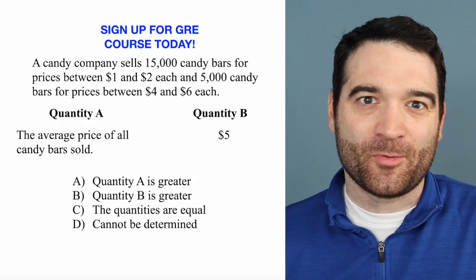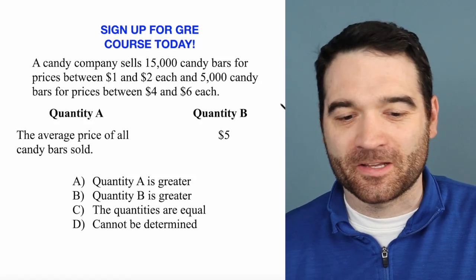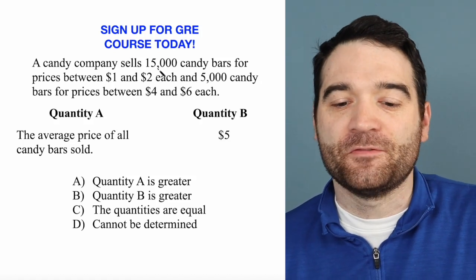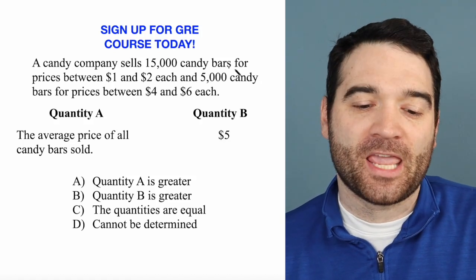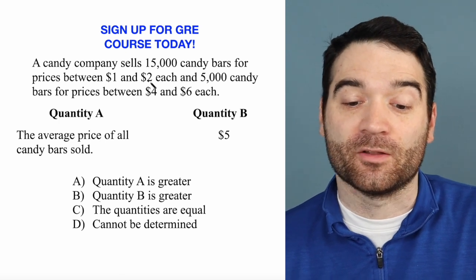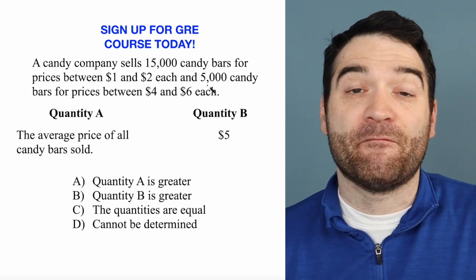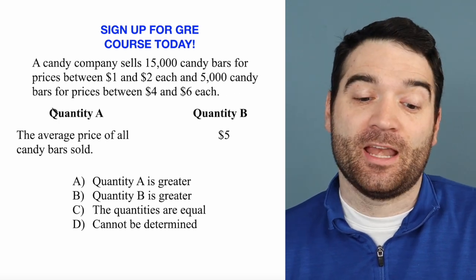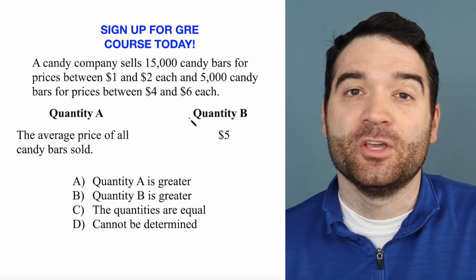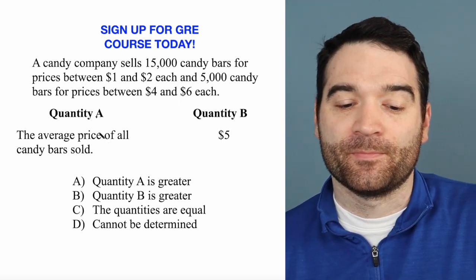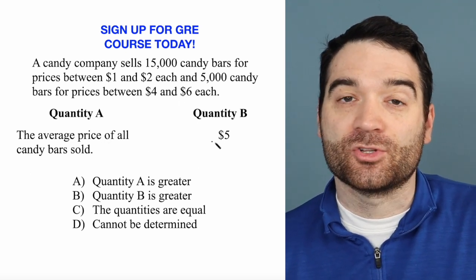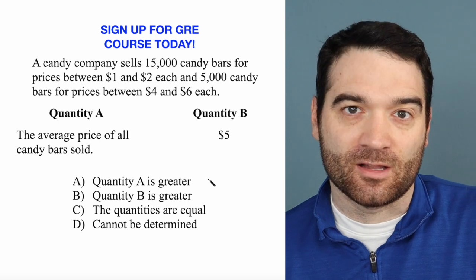Here's a GRE arithmetic question. Let's take a look. A candy company sells 15,000 candy bars for prices between $1 and $2 each, and 5,000 candy bars for prices between $4 and $6 each. So we want to know what's greater: the average price of all the candy bars sold, or $5.